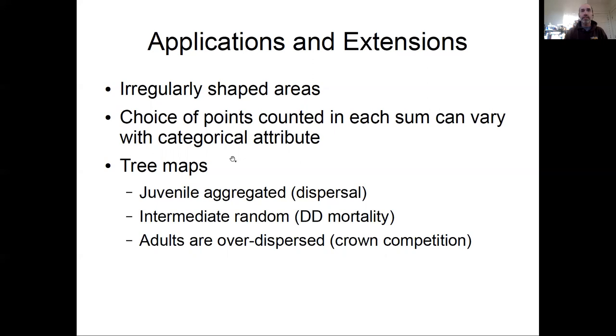A simple example is if I map the trees in the forest, something that my lab has actually done many times, I might aggregate the trees into different classes based on size. And there's actually an expectation and a lot of examples showing that juvenile trees, the little ones in the understory, are actually aggregated, which is often interpreted as the result of dispersal limitation. They're aggregated around the adults.